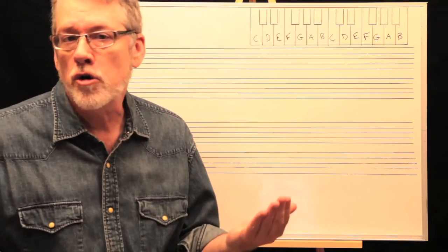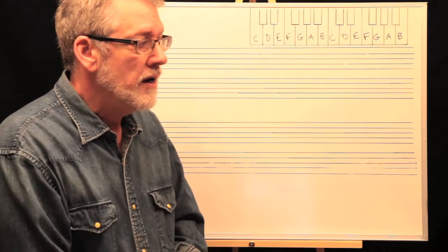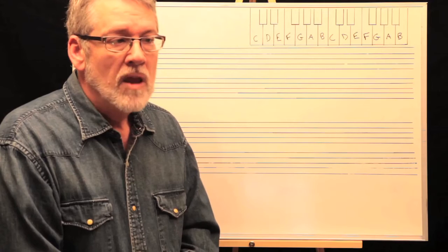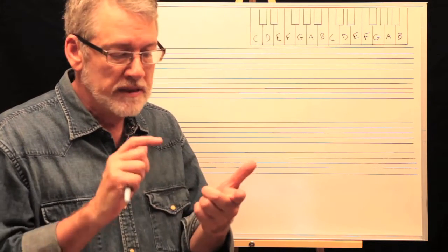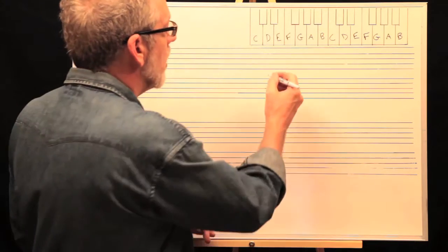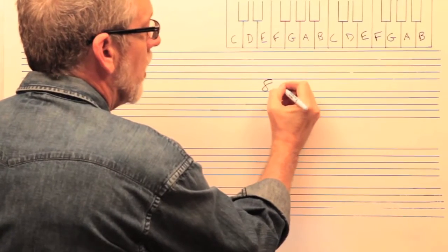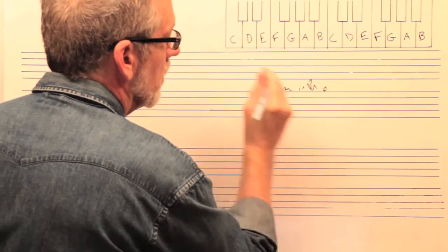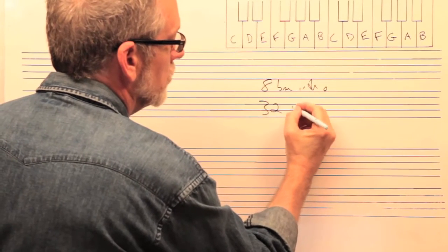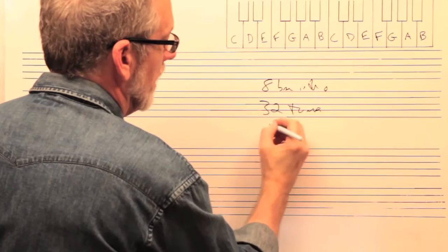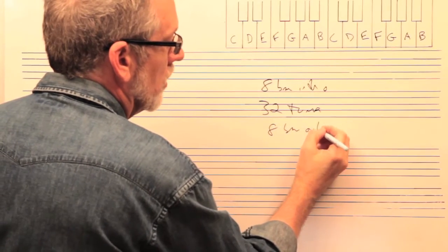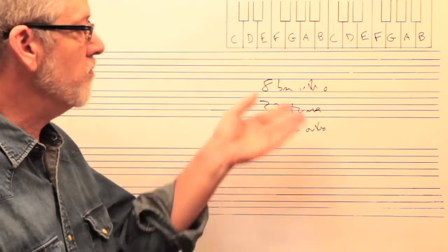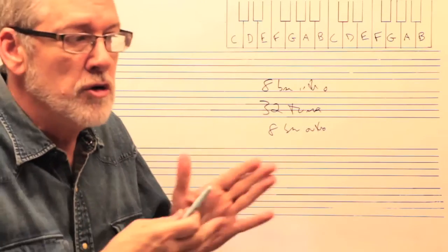So what are you going to write? I would pick something out of the real book and I would write something that's 32 bars. I would write an eight bar intro, 32 bar tune, and then maybe eight bar outro, give or take a few bars. You need to write.